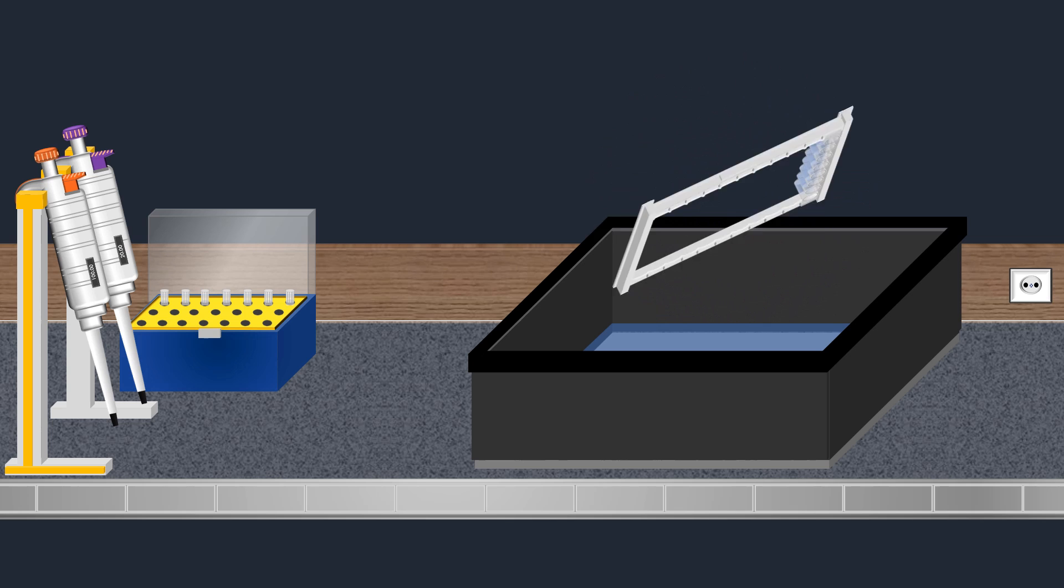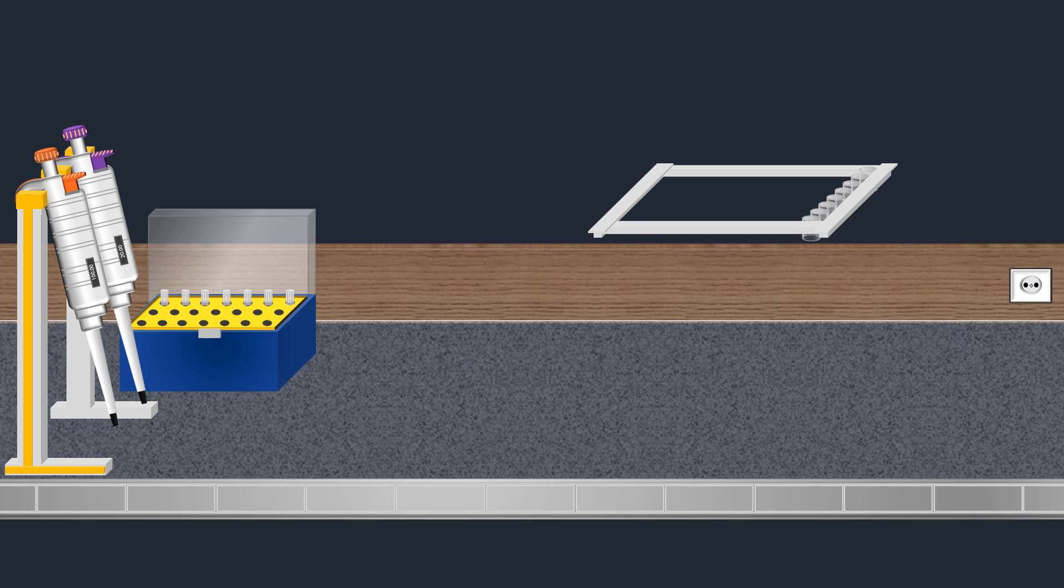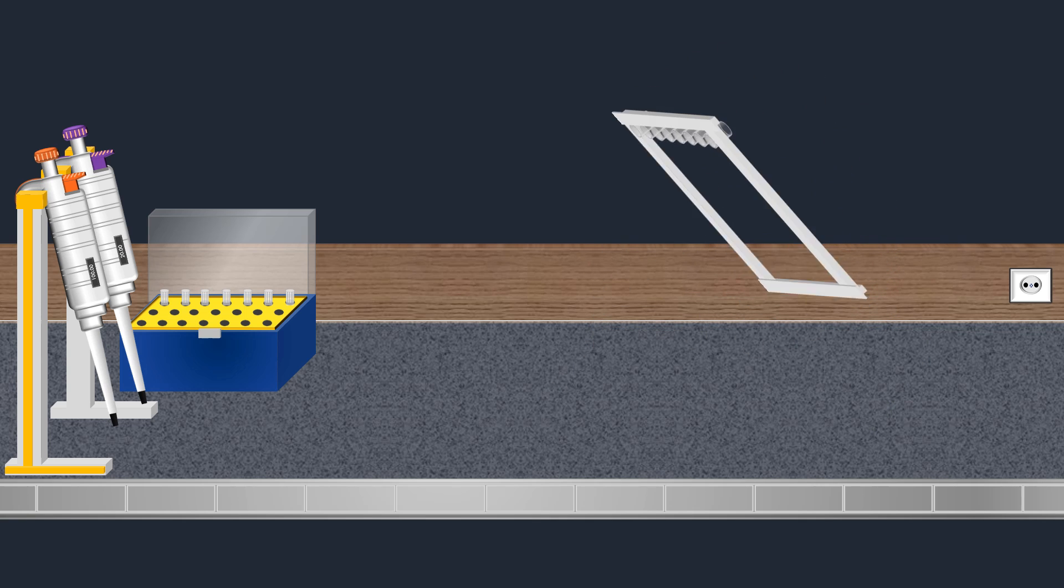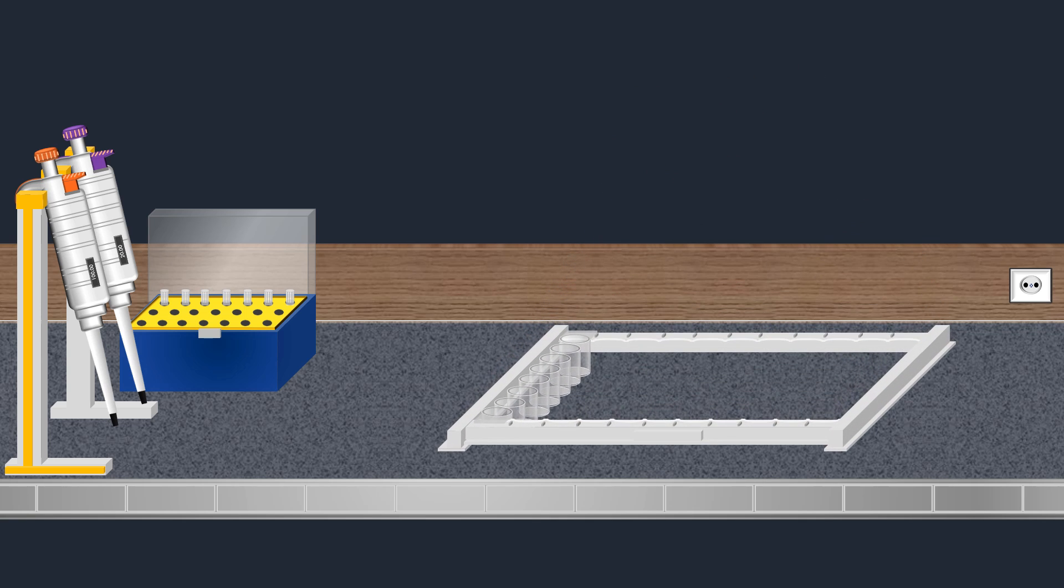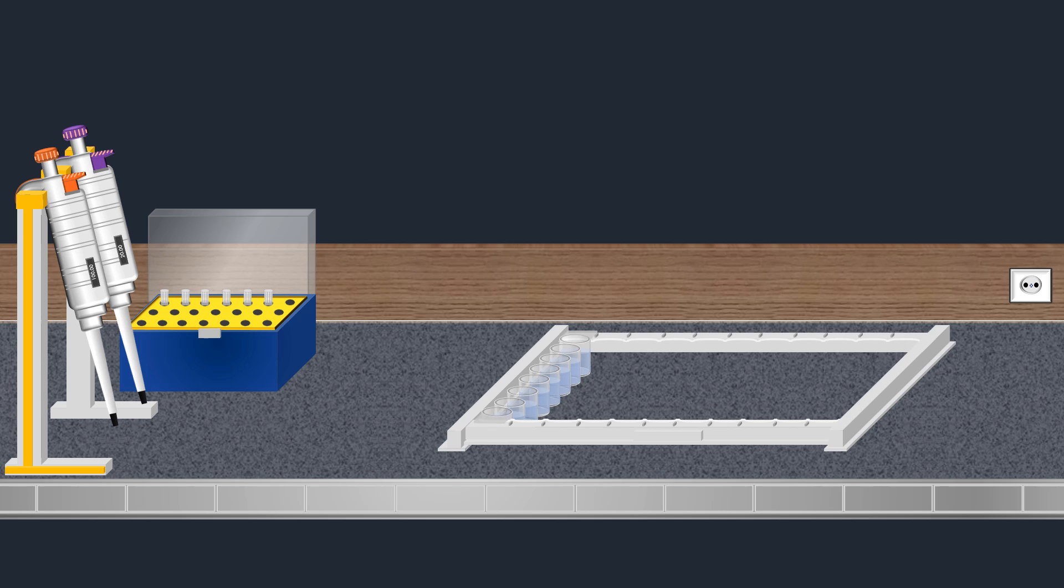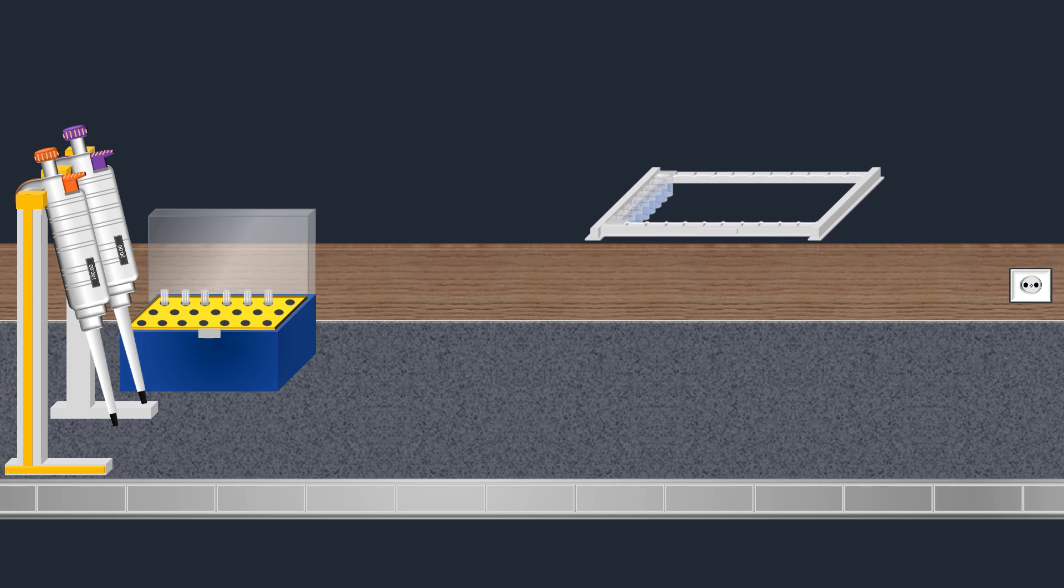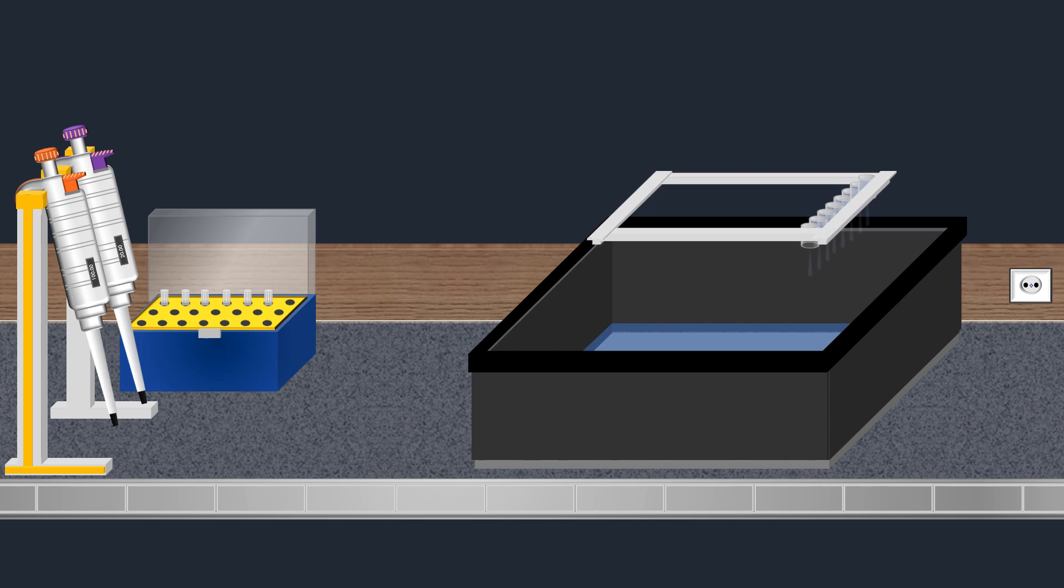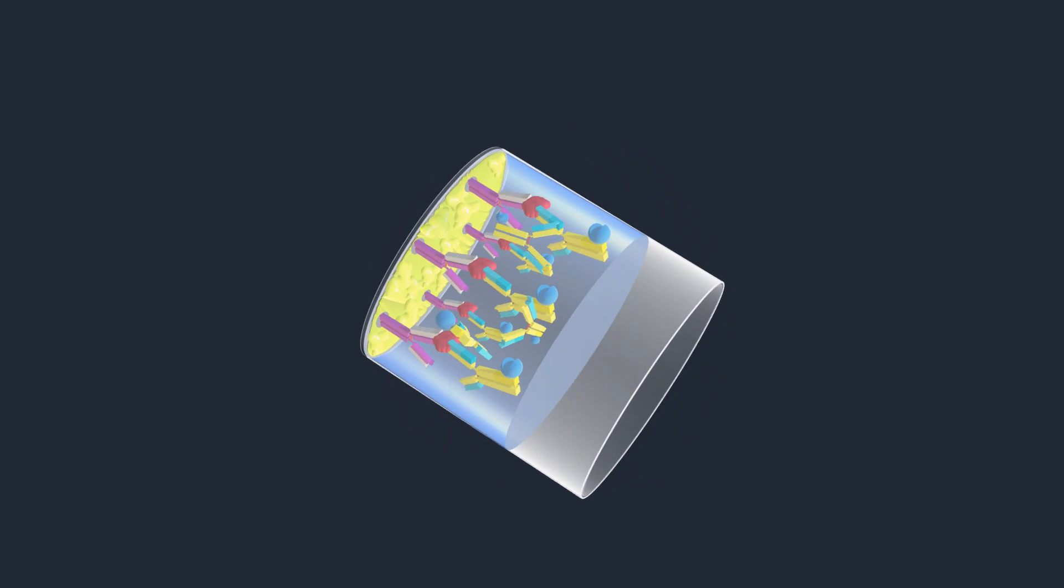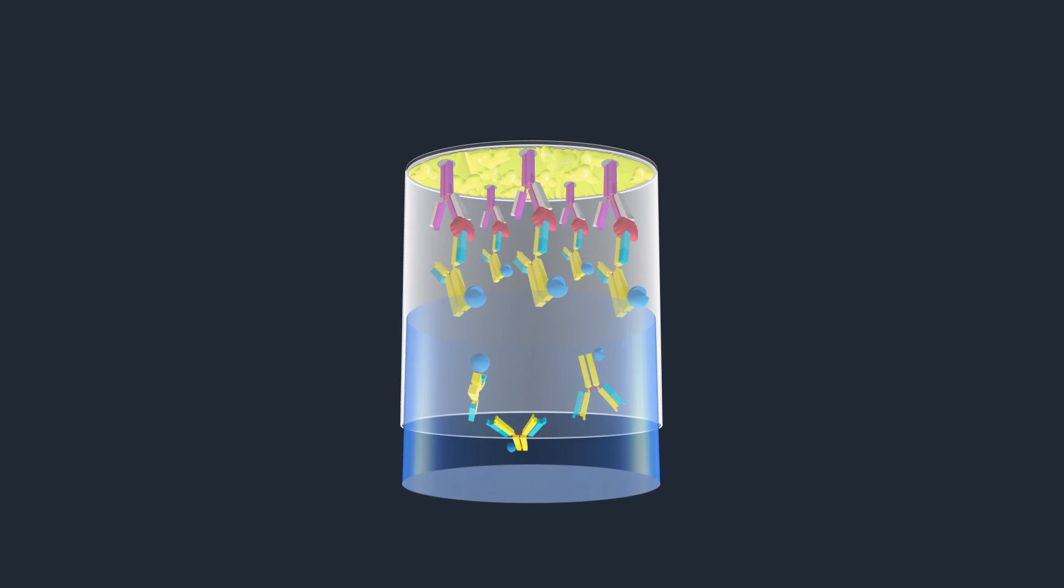Next, the secondary antibody solution is removed from each well. Following the use of the conjugated antibody, the next crucial step involves performing a final wash to remove any excess secondary antibody. The wash buffer effectively removes any unbound antibody, leaving only the specific sandwich complexes.